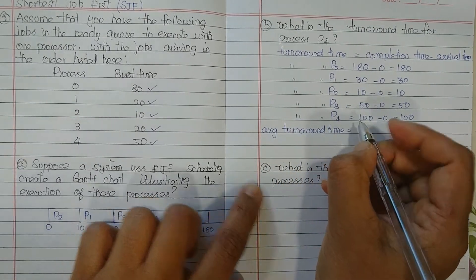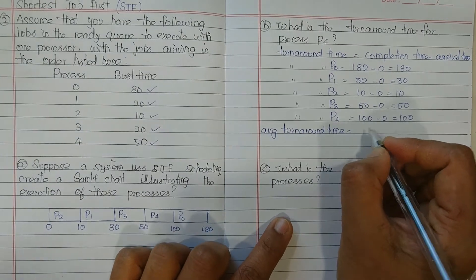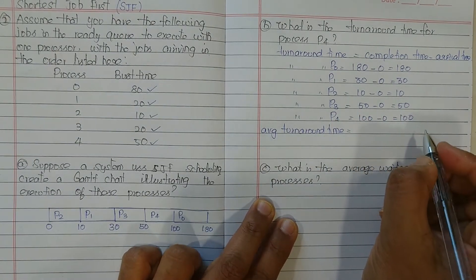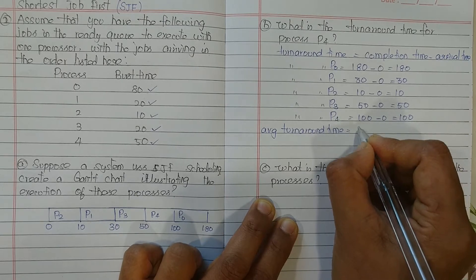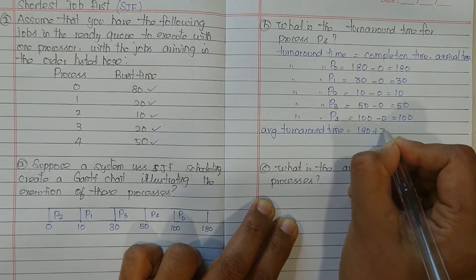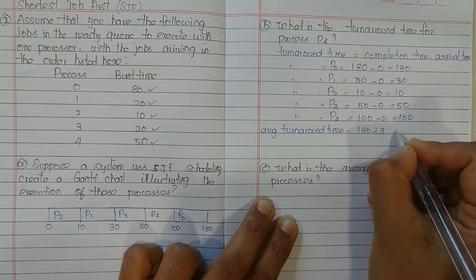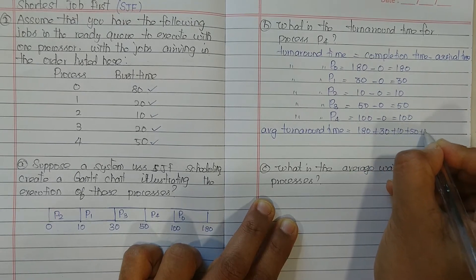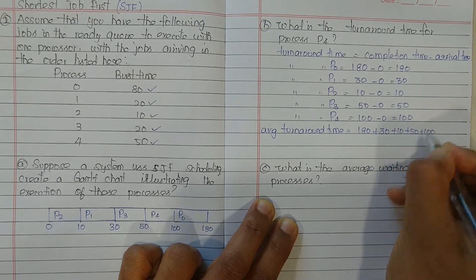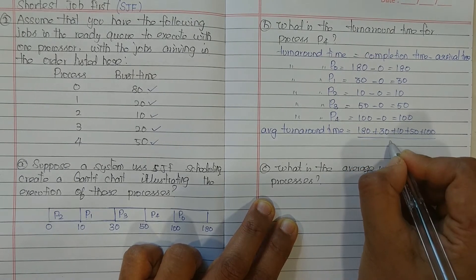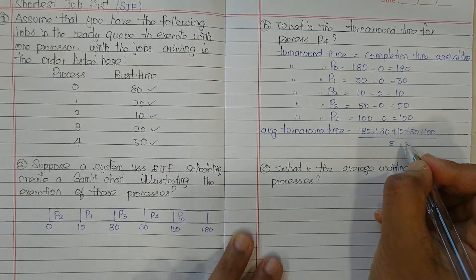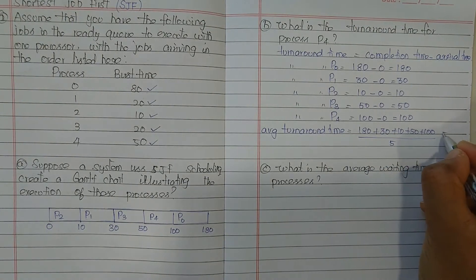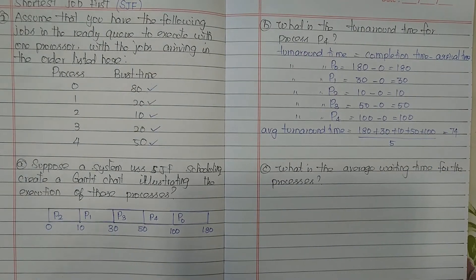For the average turnaround time, sum all turnaround times and divide by the number of processes. So: 180 + 30 + 10 + 50 + 100 = 370, divided by 5 processes, giving an average turnaround time of 74 milliseconds.